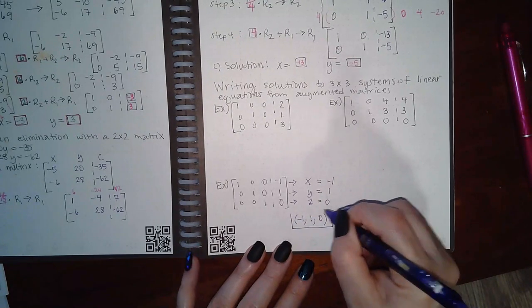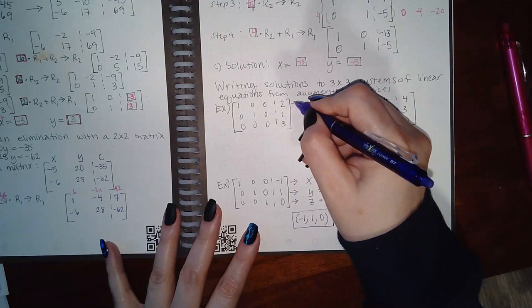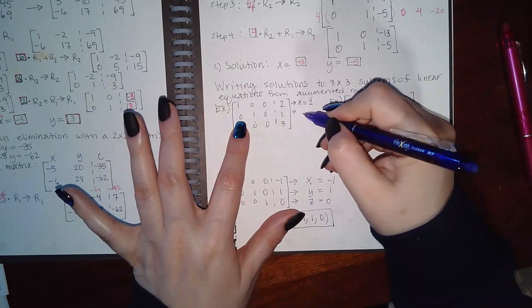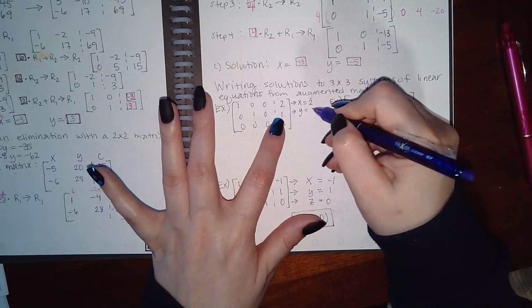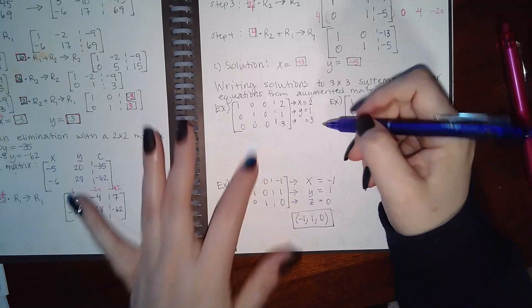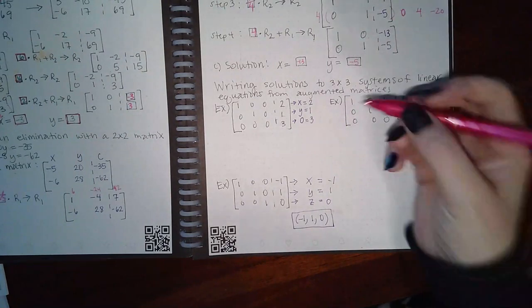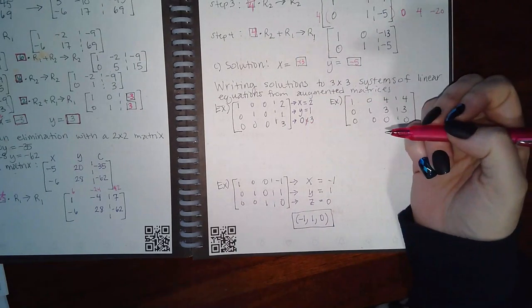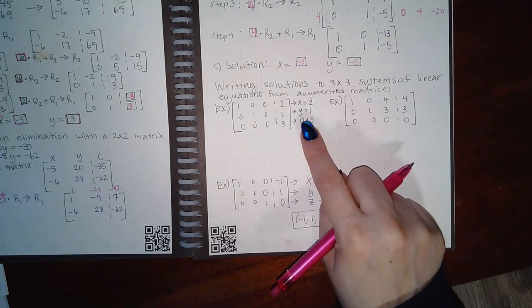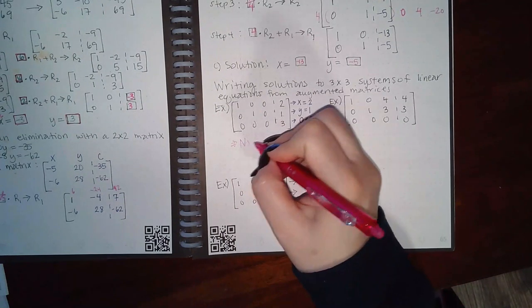For the top example: 1x, no y's, no z's equals 2; no x's, 1y, no z's equals 1; and no x's, no y's, no z's equals 3. If I have nothing on the left-hand side, you fill in that spot with a zero. This statement is a contradiction — zero does not equal 3. When you get a statement like this that's not true, the system has no solution.